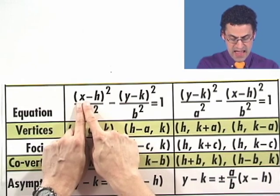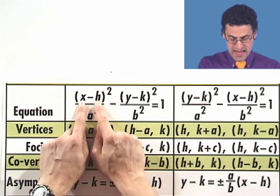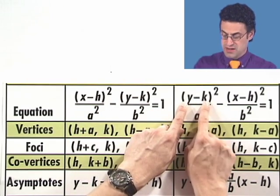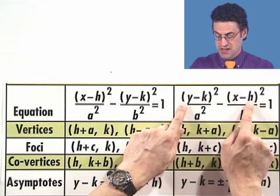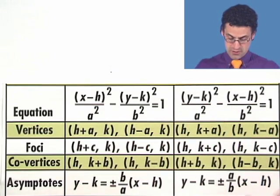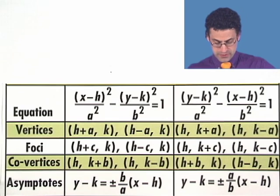Notice that the x always hangs out with the h, the y always hangs out with the k, even when we switch and the y comes first. The bottom line is h is an x value, k is a y value, and so they always hang together. And then everything else sort of follows suit.